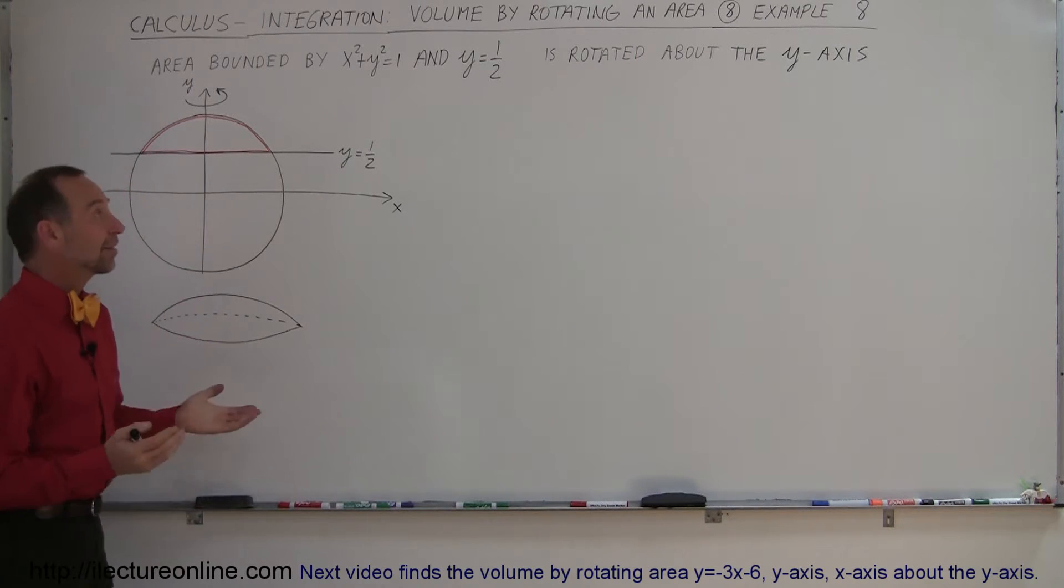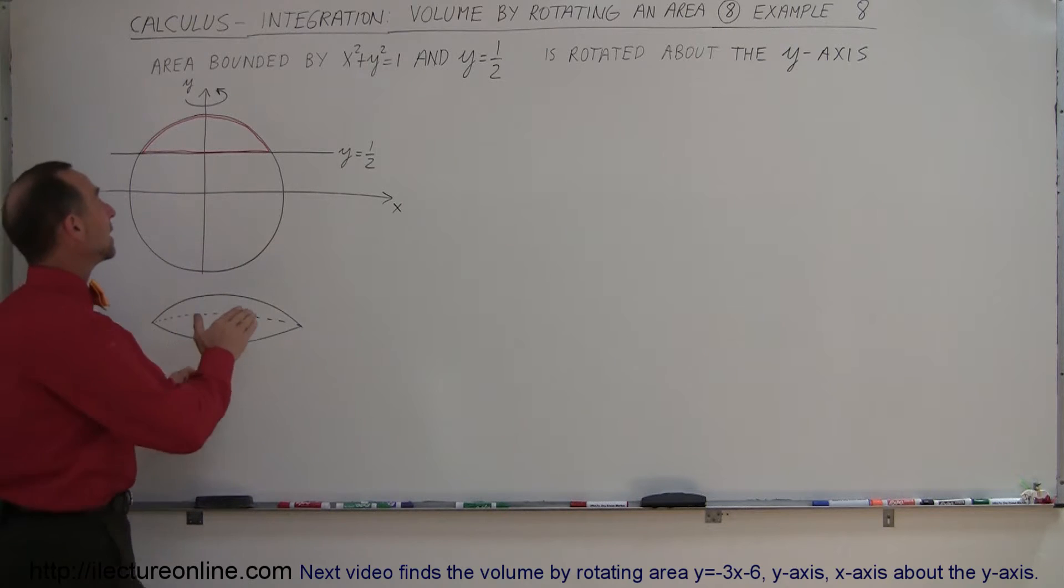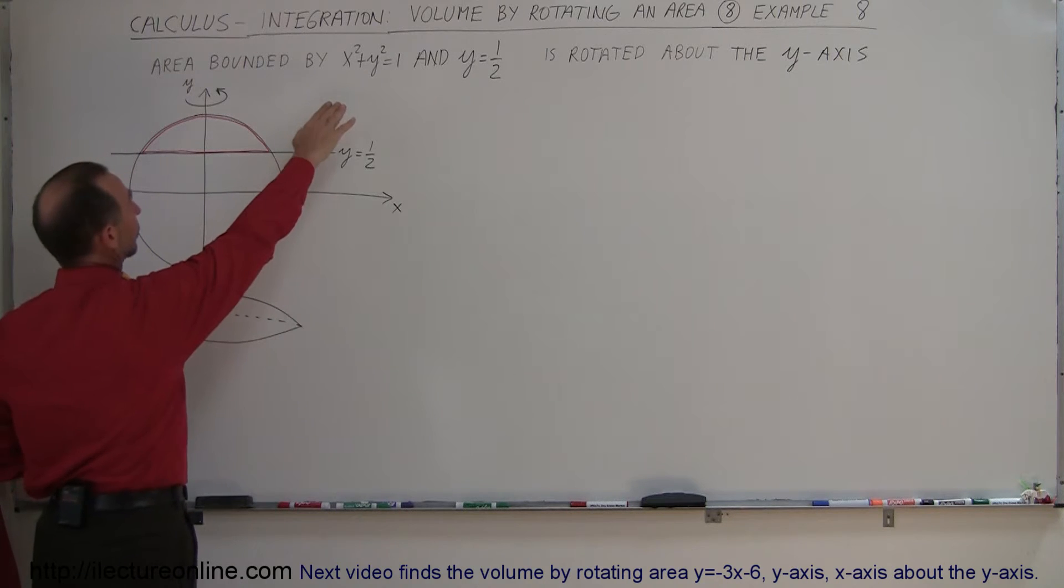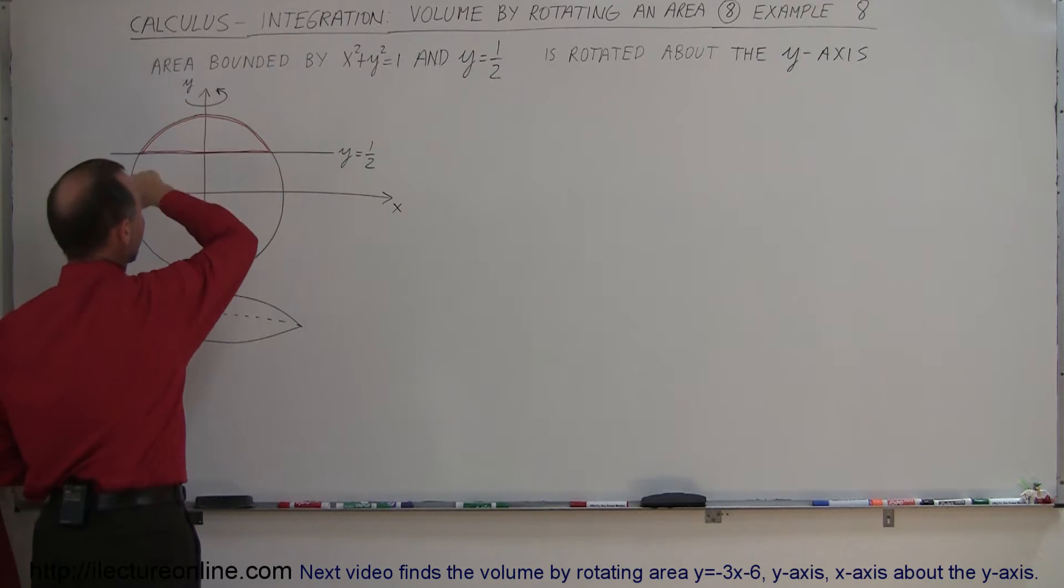Welcome to our lecture online and here's the next example of how to find the volume of something that we rotate. Here we're taking the circle equation again, x squared plus y squared equals 1, so we have a nice circle here.